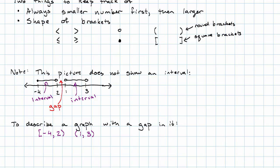To put them together, we use a U-shaped symbol. This symbol means union. And it just means put these sets together. So because there's a gap, this is not one interval, it's two intervals put together. And to put them together, the tool that we use is this union symbol.